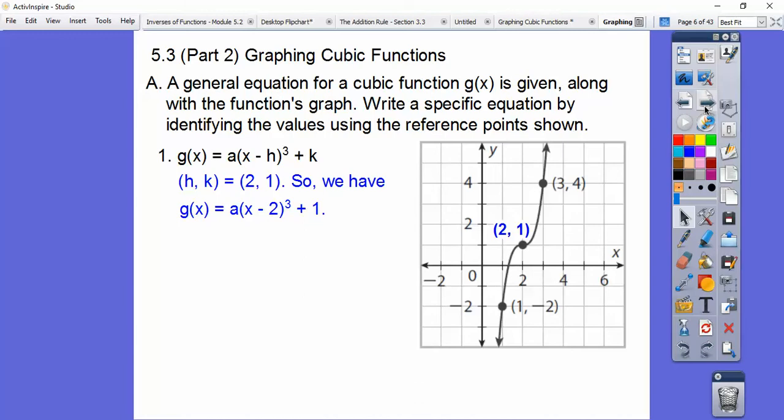Well, there's two ways to do it. The easier way is this: the general equation went over 1 up 1. This one goes over 1 up 3. So 3 is a. That's our answer: g(x) equals 3 times (x minus 2) cubed plus 1.